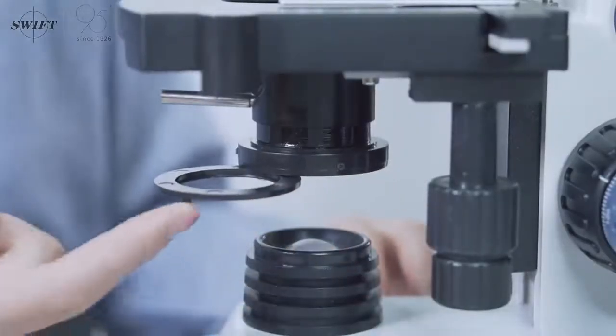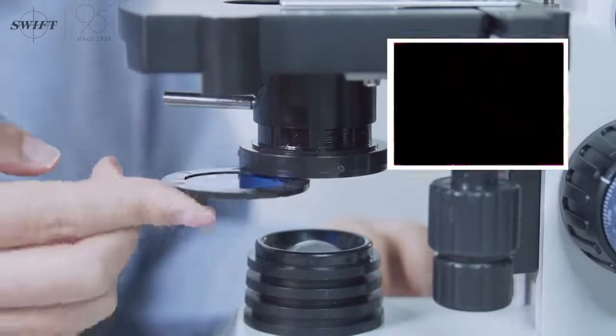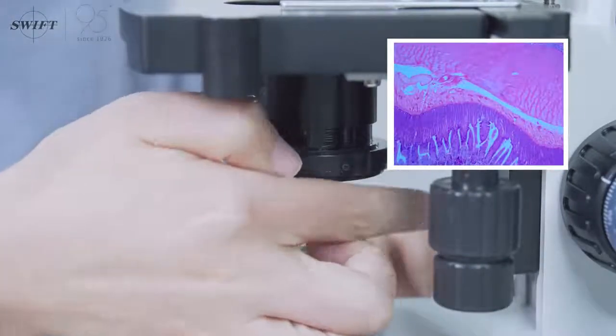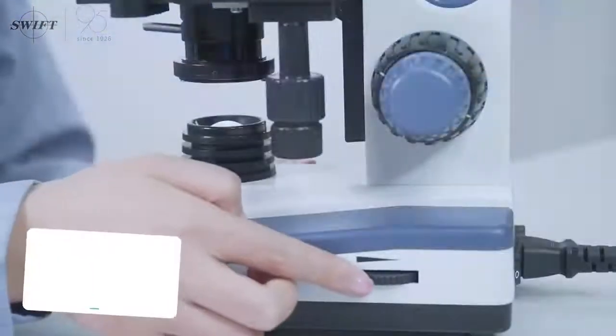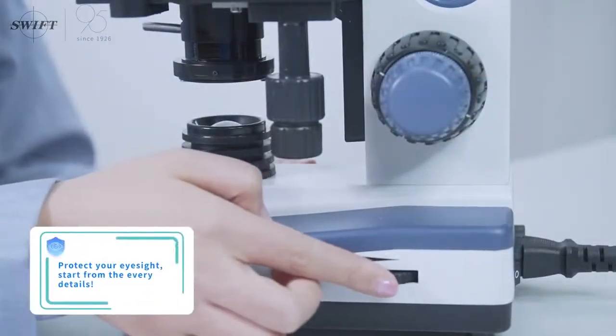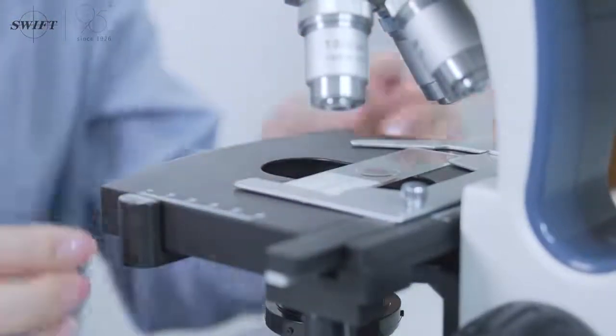The color filter will make the light source closer to natural light, and the image under the mirror will be more realistic. Turn on the power switch and adjust the brightness of the light source properly to avoid hurting your eyes. Put in the slide preparation and observe the sample target under the microscope.